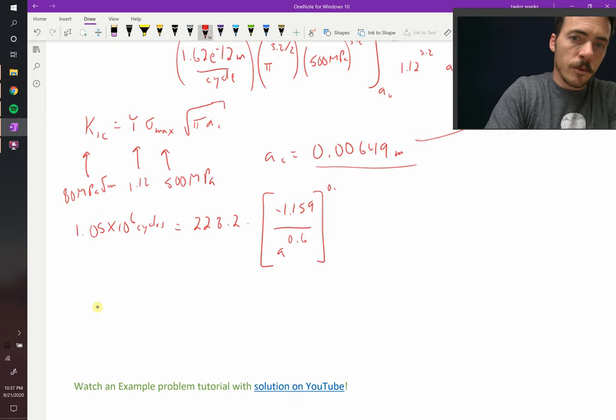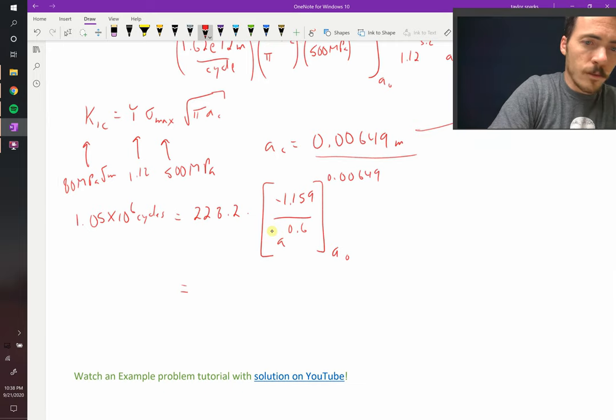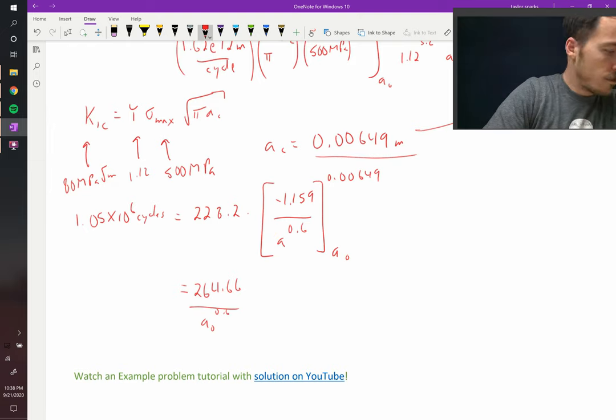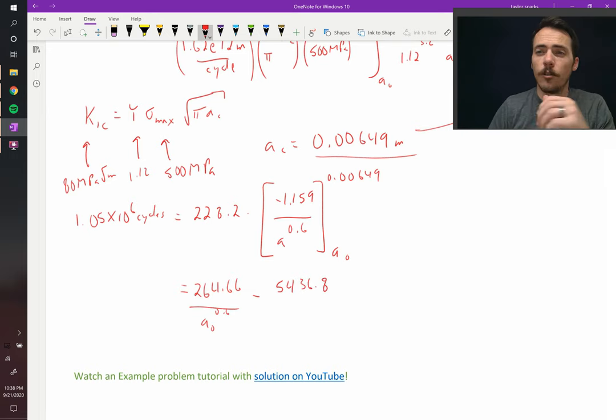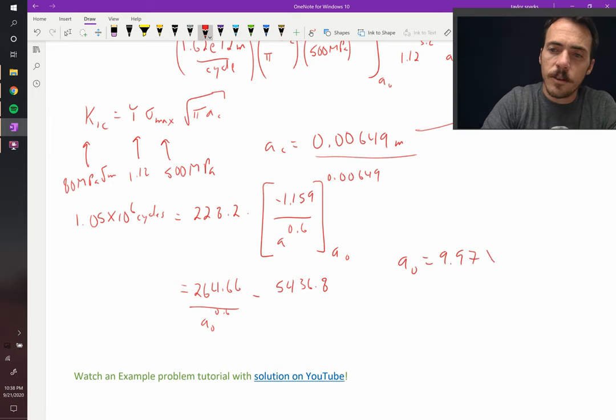This integral will be taken from 0.00649 down to the starting size A0. When we plug in those values, we get 264.66 over A0 to the 0.6 minus 5,436.8. When we solve for A0, I find that A0 is equal to 9.97 times 10 to the negative 7 meters.